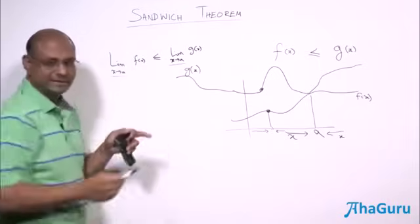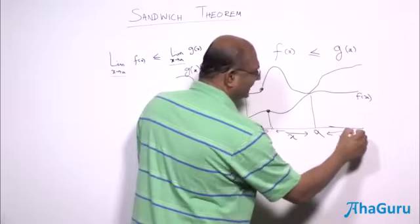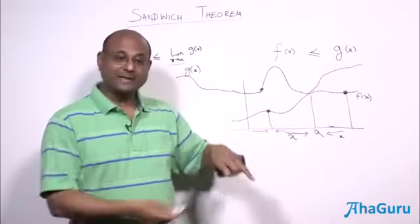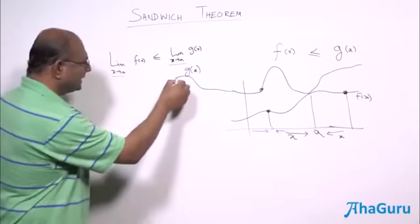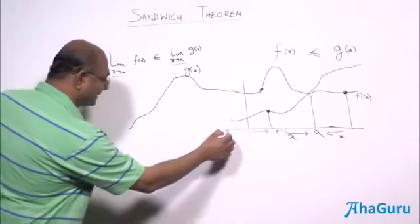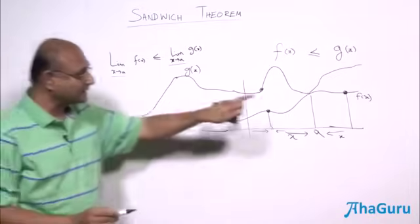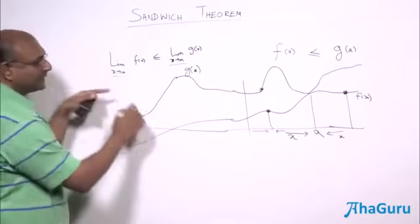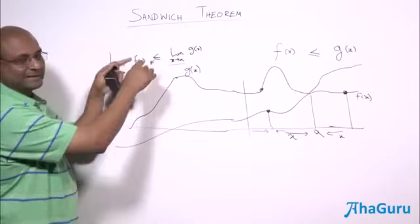Both limits are as x tends to A. Is it possible that there is a value of x for which g(x) is less than some value? Yes, that's possible, but at that same place f(x) has to be even lower than g(x). When we are doing limits, we are approaching the same place, so the limit of f(x) is less than the limit of g(x).